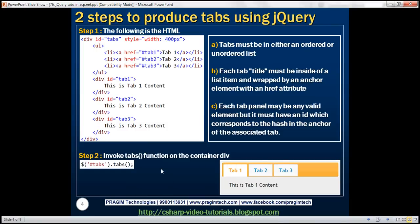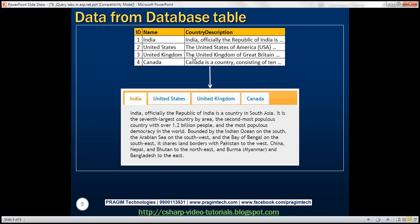But what if we have the data in a database table? We have a countries table with ID, name, and description columns. What we want to do is produce this tabs widget in an ASP.NET web forms application using this database data. The tab headers should be the names of the countries and the panels should have the country description.